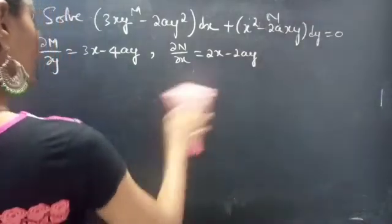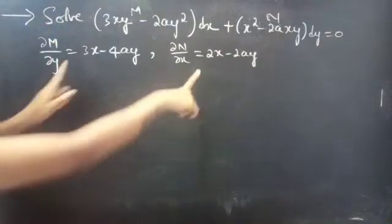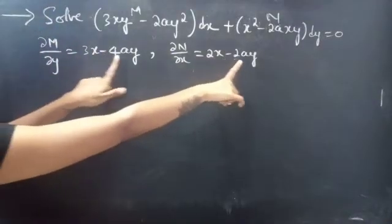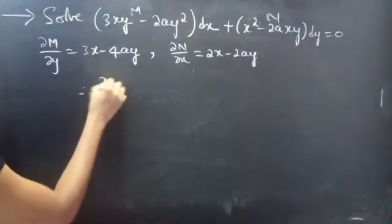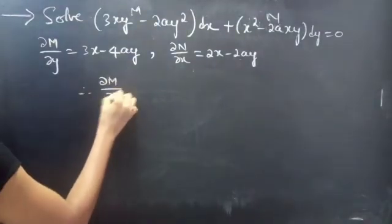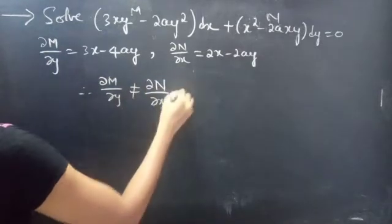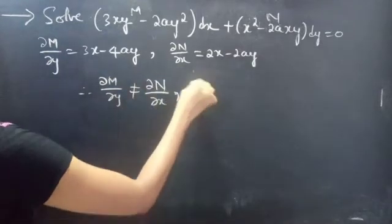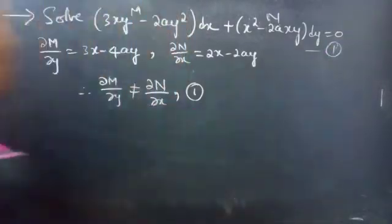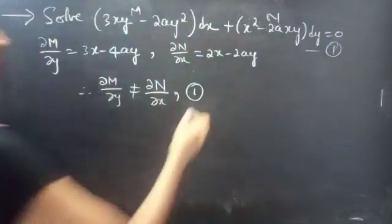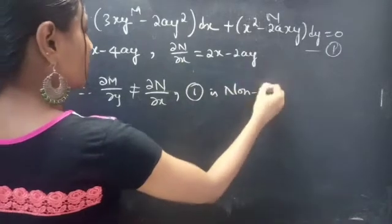It's clear that ∂M/∂y is not equal to ∂N/∂x. Therefore, ∂M/∂y is not equal to ∂N/∂x, and from this we can say that the given differential equation (equation 1) is non-exact.